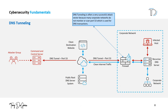Number five is DNS tunneling. DNS tunneling is a technique used to bypass security measures and exfiltrate data through the domain name system protocol. It is a method of using the DNS protocol to establish a connection between a client and server and then send data over that connection. The data is encoded and hidden within DNS queries and responses, making it difficult to detect and block.